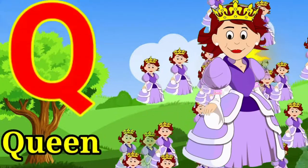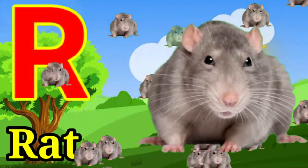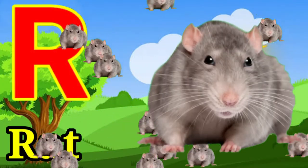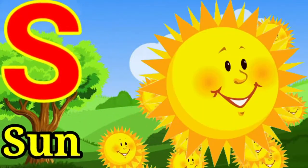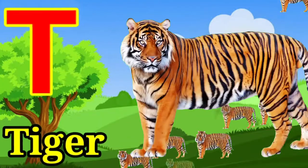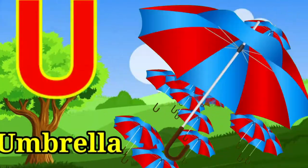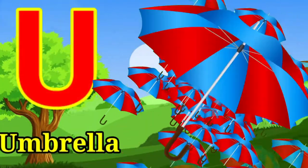Q for queen, R for rat, S for sun, T for tiger, U for umbrella.